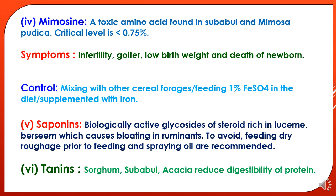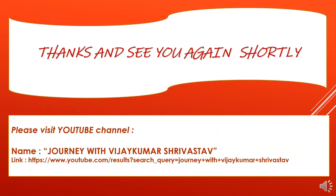The fifth type of toxic constraint is saponins, which are biologically active glycosides of steroidal nature, rich in lucerne and berseem. They cause bloating in ruminants. To avoid this, feeding dry roughage prior to feeding and spraying oil are recommended. The sixth toxic constraint is tannins, found in sorghum, Subabool, and acacia, which reduce the digestibility of protein.